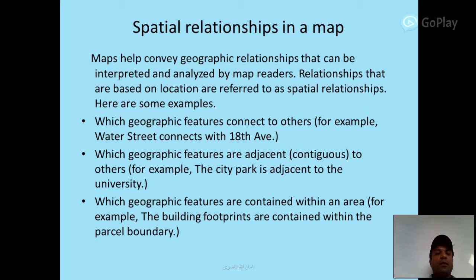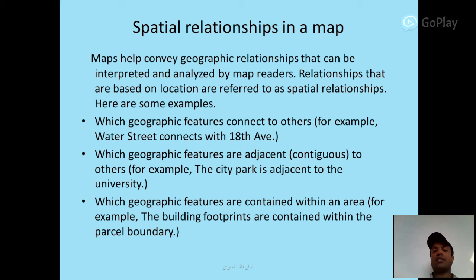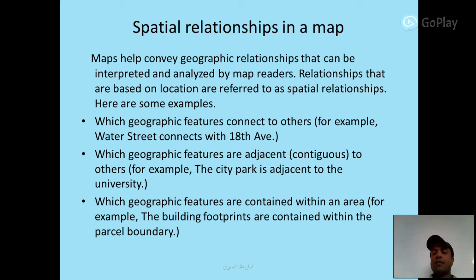Spatial Relationships in a Map: maps help convey geographic relationships that can be interpreted and analyzed by map readers. Relationships based on location are referred to as spatial relationships. Examples include: which geographic features connect to others — for example, Water Street connects with 18th Avenue; which geographic features are adjacent to others — for example, the city park is adjacent to the university; which geographic features are contained within an area — for example, building footprints are contained within the parcel boundary.